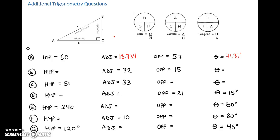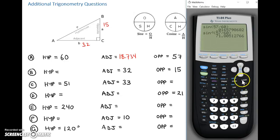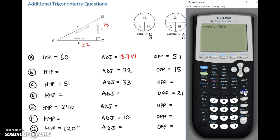Given values: adjacent is 32, opposite is 15. We don't know anything else, so let's start with the angle. If we have the opposite and the adjacent, we can use tan to find that angle. We need to do the inverse, and tan is the opposite over the adjacent. So 15 divided by 32 gives us 25.11 degrees.